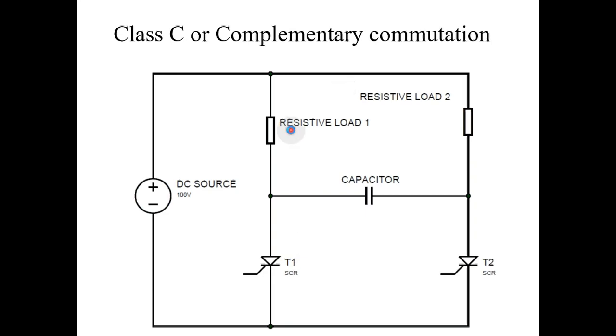In case of Class C or complementary commutation, we have two loads (load 1 and load 2), two thyristors or SCRs (T1 and T2), a capacitor, and a DC source.